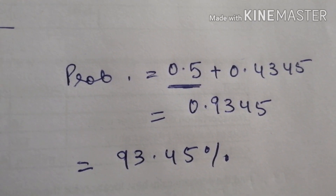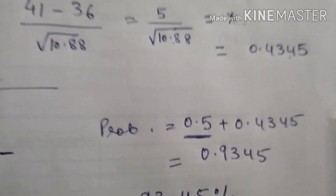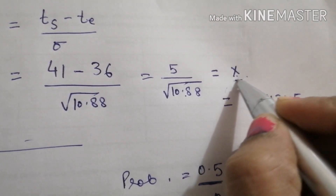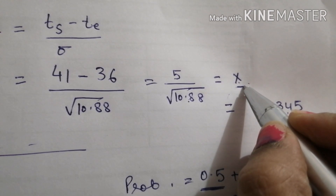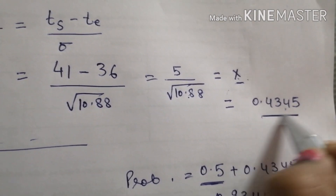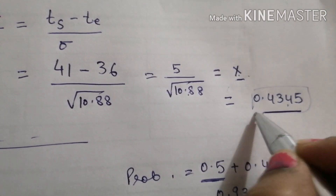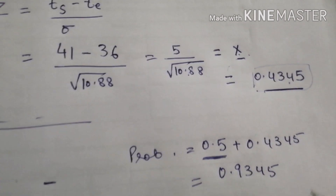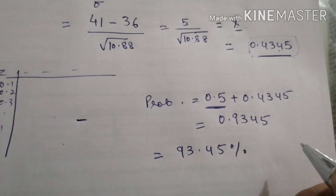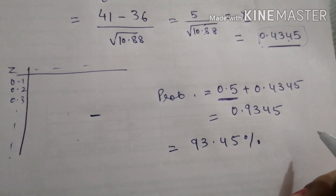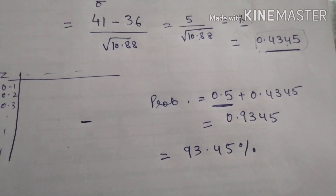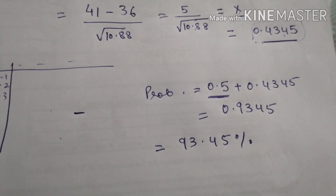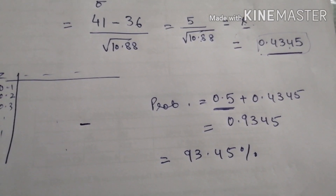This is how we solve PERT questions with probability values. You can calculate the Z value using a calculator and refer to the normal distribution table — in exams, Z values will be provided in the question itself. If you like the video, please share it and subscribe to the channel Operations Point for more videos. If you have any doubts or want a video on another topic, mention it in the comments. Thank you.